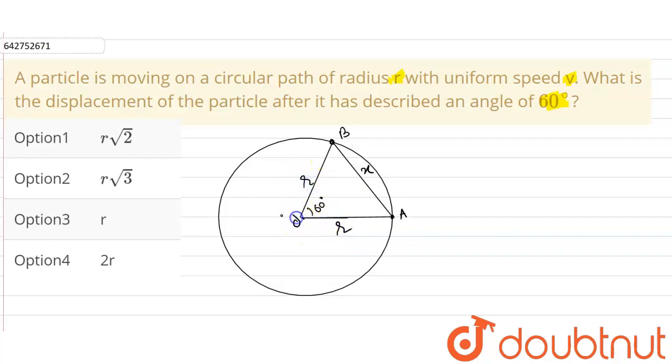Now using the cosine rule, what we can say is cos 60 degrees will be equal to r squared plus r squared minus x squared divided by 2r squared.